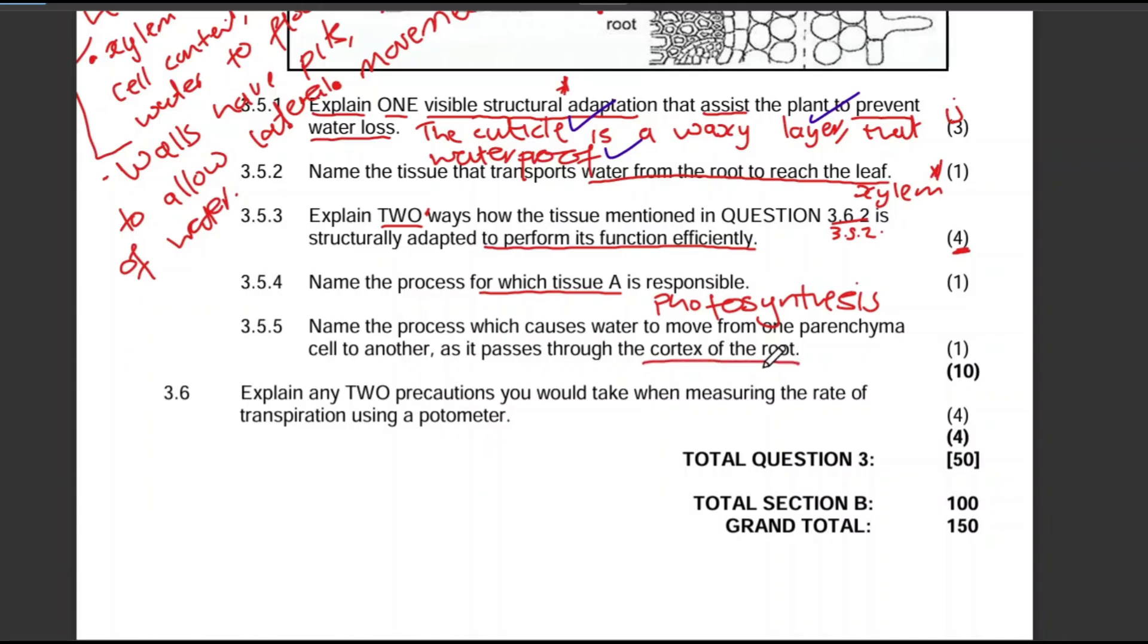For one mark, that process will be osmosis. We can speak about osmosis because water will move by osmosis. But in the different options we also have in the memo: root pressure, transpiration pull, and also transpiration. But the most correct one is osmosis because water will move from a region of high concentration to a region of low concentration.